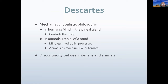Descartes saw animals as automatons — automatic behavior. Without a ghost in the machine, a sensory stimulus would activate a sensory organ, force the flow of animal spirits through the sensory nerves to the brain, which would automatically turn around and be pushed out through the motor nerves to control the body. It's basically stimulus in, response out — the same mechanical process as in the human body, except humans have the ghost in the machine enabling free will and conscious choice.